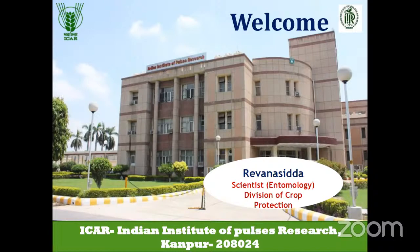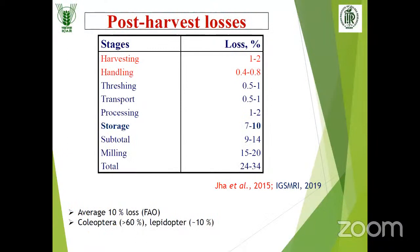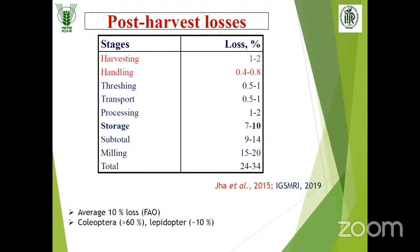Today I'm covering briefly about stored grain pests which are infesting cereals, pulses, and other stored products — their biology and management. I will be speaking from the perspective of preparing for JRF, SRF, and ARS exams, highlighting those important points. With respect to post-harvest losses, the average post-harvest loss commonly considered is around 10%.